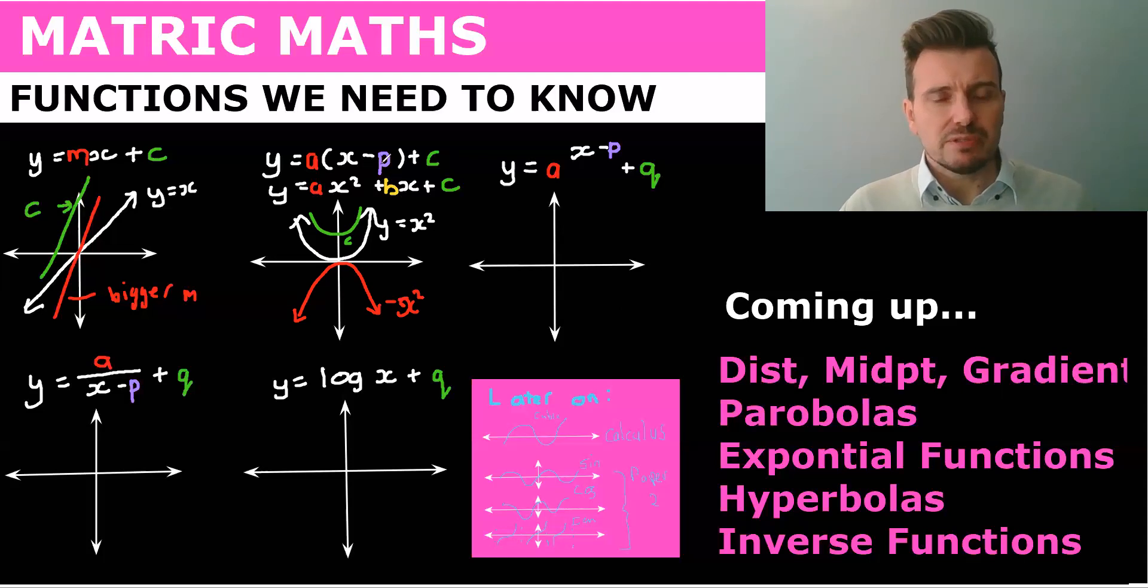Now negative p, the reason we say negative p is because this changes your x value. Now a negative p, so say it was an x minus two, because the x is on the opposite side. So if you were to solve for just x, the two would go across and become plus two. A minus two shifts it, instead of going backwards a minus actually shifts it forward.